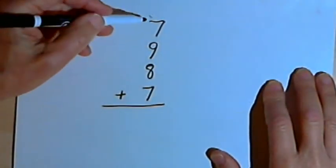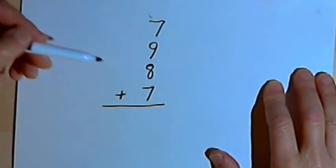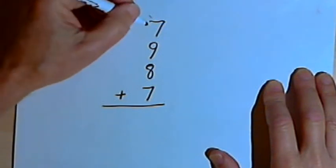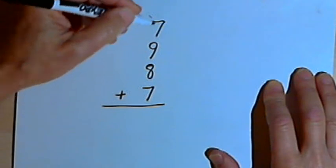Let's say I've got this column of numbers that I want to add up. I've got 7, 9, 8, and 7. Now typically what I would do would be to start maybe at the top or the bottom. Doesn't matter where you start. And I would keep adding numbers.